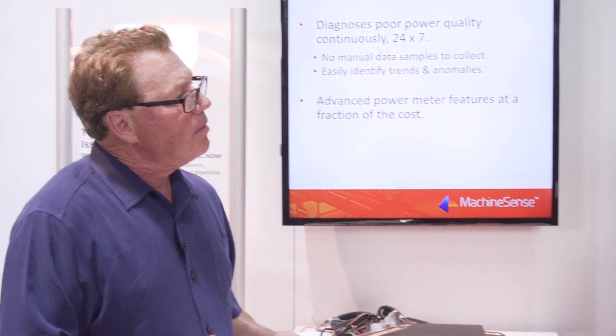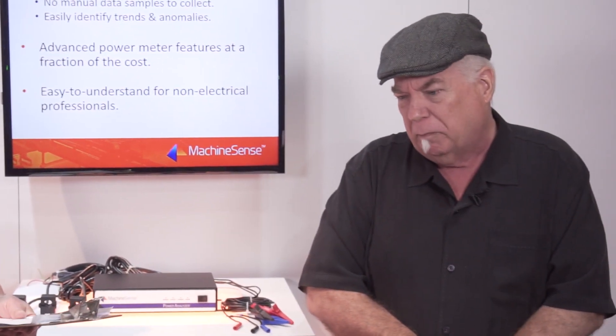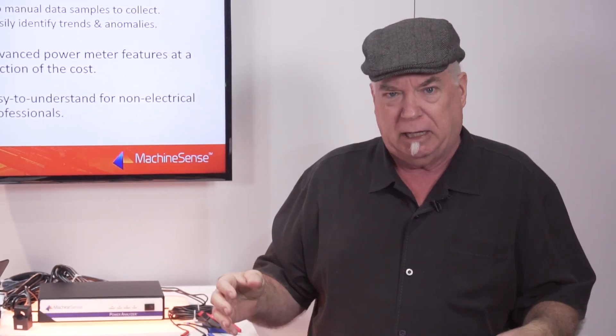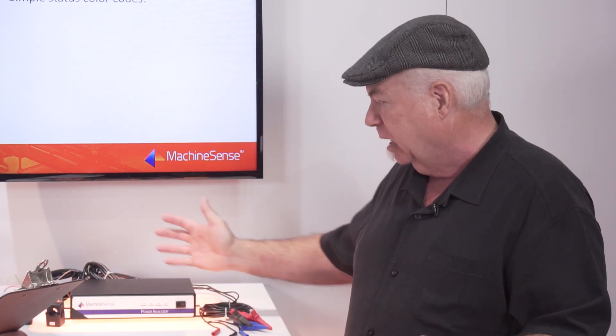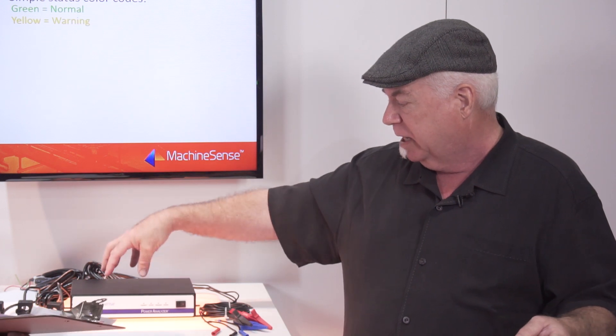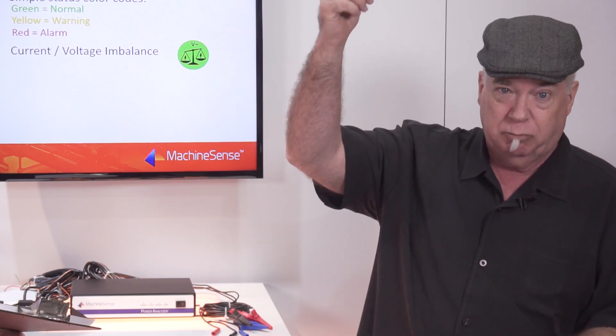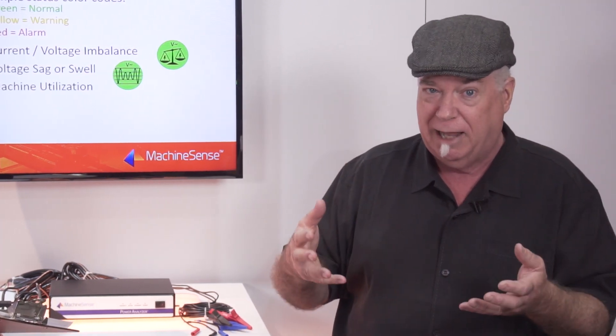The other power analyzers out in the market are more spot checks. You take it out, carry it over to one piece of gear, hang it on there, and every 15 minutes maybe it logs data. Instead of getting one signal every 15 minutes, we're getting 8,000 signals every second on current and on voltage. We do a lot of edge computing in the processor we have here, aggregate that data, and send it up to the cloud where more analysis is done.